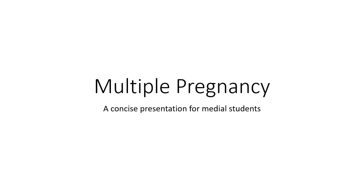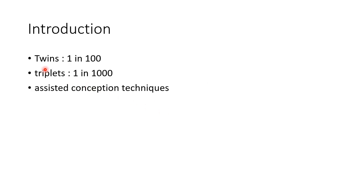Hello, this is Cynthia Medico and in this video we are going to see about multiple pregnancy. This is a concise presentation for medical students. The incidence of twins is 1 in 100 pregnancies, and the incidence of triplets is 1 in 1000 pregnancies. The incidence of multiple pregnancy is increasing due to the increasing use of assisted conception techniques.